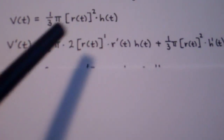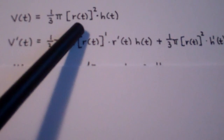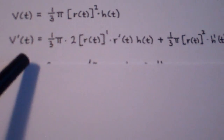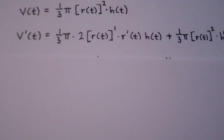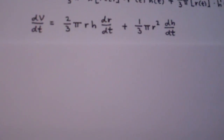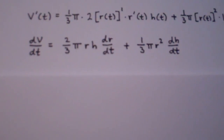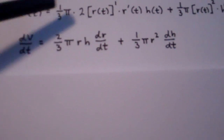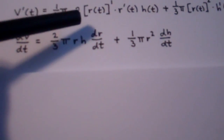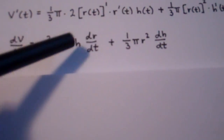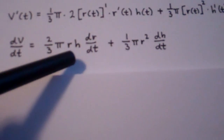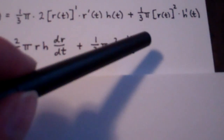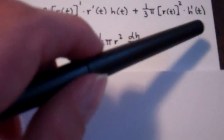After we differentiate, we can put everything back into the original variable — r(t) goes back to just r, and h(t) goes back to just h. And we change all of our derivatives to Leibniz notation. So v prime of t goes to dv/dt. Combining the 1/3 and the 2 gives 2/3, so we get 2/3 π r h · dr/dt in the first term, and 1/3 π r² · dh/dt in the second term.